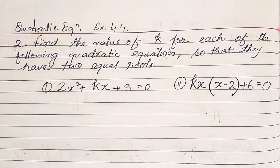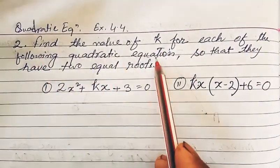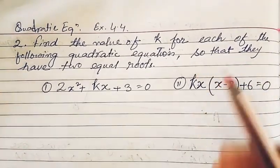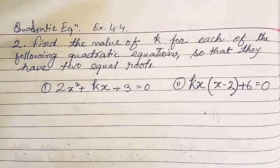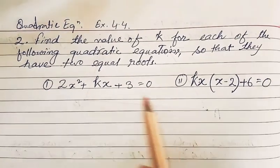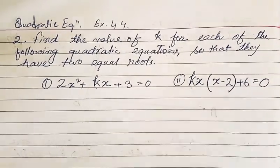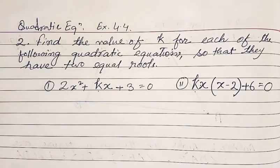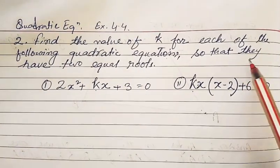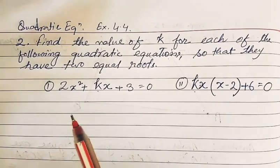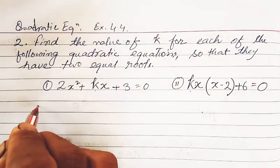This is from the sector quadratic equations, question number two: find the value of K for each of the following quadratic equations so that they have two equal roots. The equations are given, and you have to find the value of K with the condition that each equation has two equal roots.